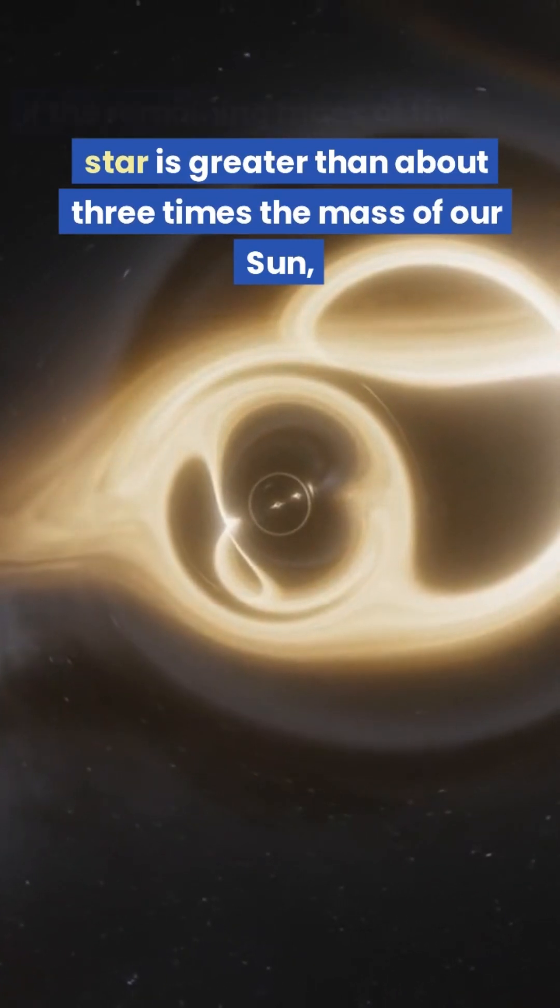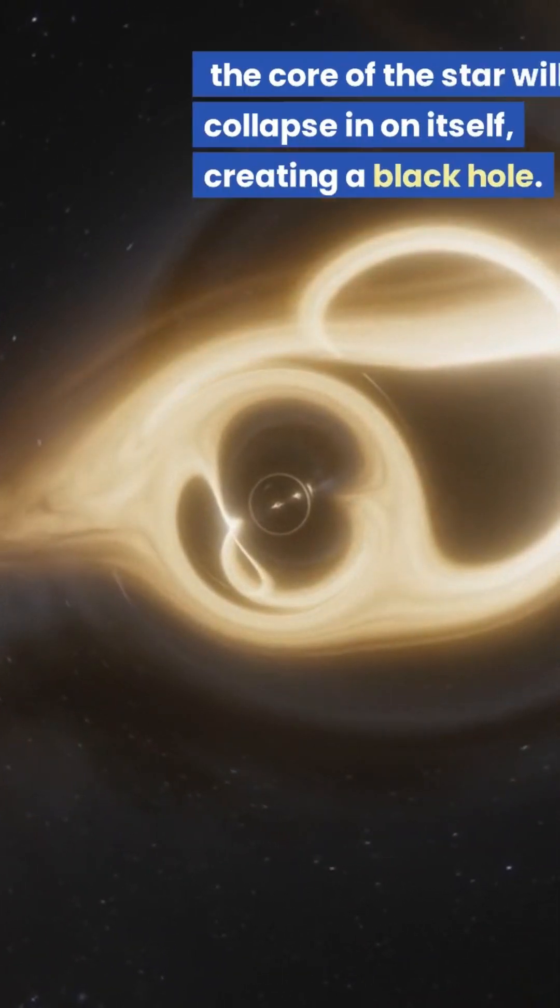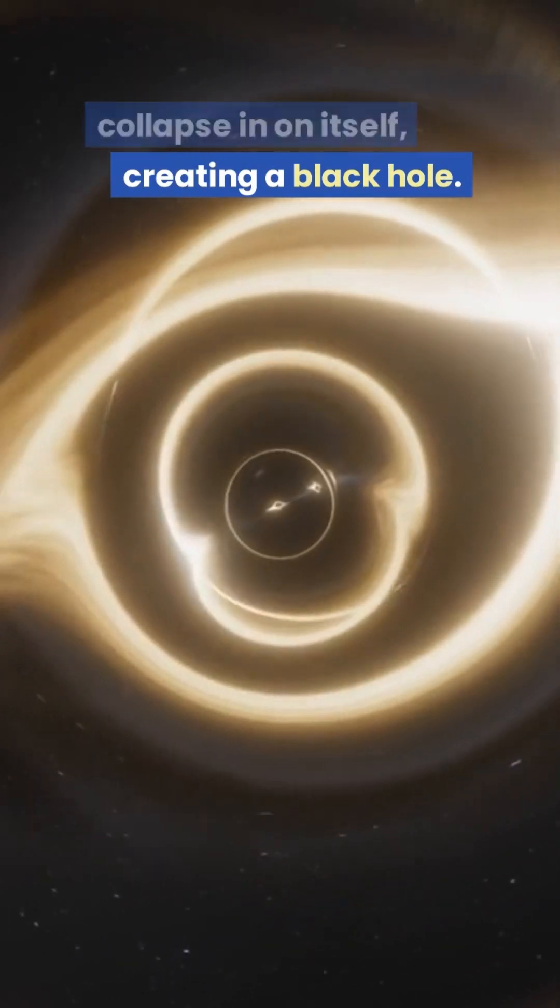If the remaining mass of the star is greater than about three times the mass of our sun, the core of the star will collapse in on itself, creating a black hole.